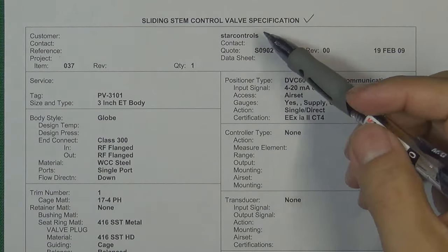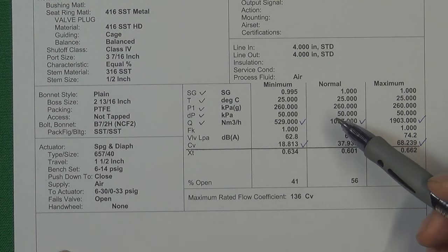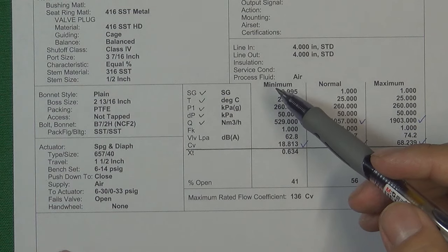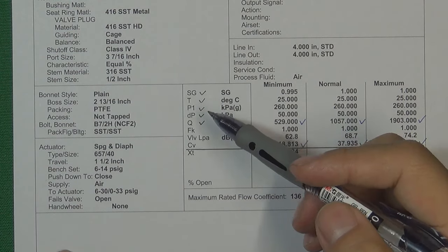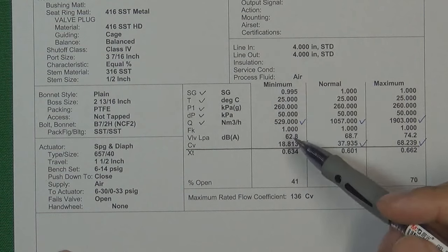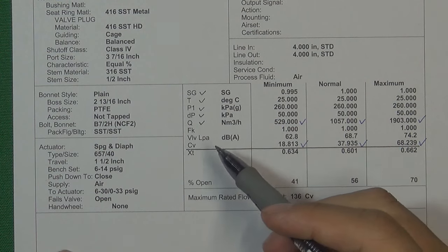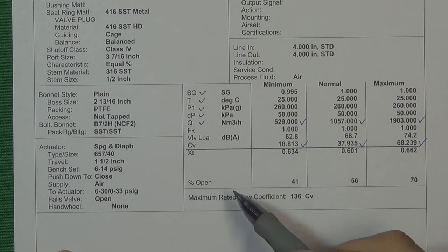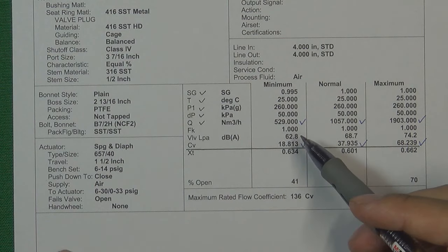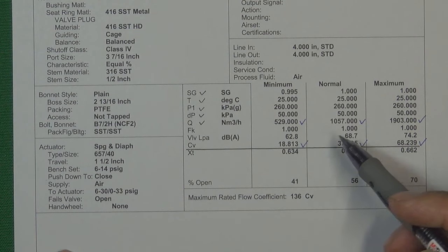Here is a real control valve specification to understand how to choose a correct control valve according to the flow medium CV. It includes a lot of information about this control valve. When customers choose a control valve, they tell the valve manufacturer the minimum, normal, and maximum flow capacity. The valve manufacturers use those five design factors to calculate the minimum CV, the normal CV, and the maximum CV, then choose a correct control valve to match the flow medium CV. This valve, when it opens to 41%, gets the minimum CV; when it opens to 70%, it gets the maximum CV.